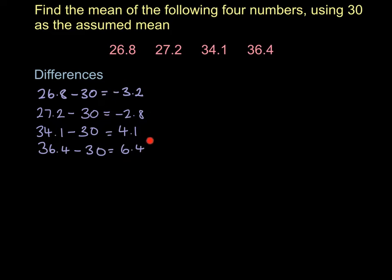Now we've got four differences, and we're going to work out the mean of those differences. So we're going to calculate that mean, and then we're going to use that mean to calculate our accurate mean. It all gets a bit confusing.